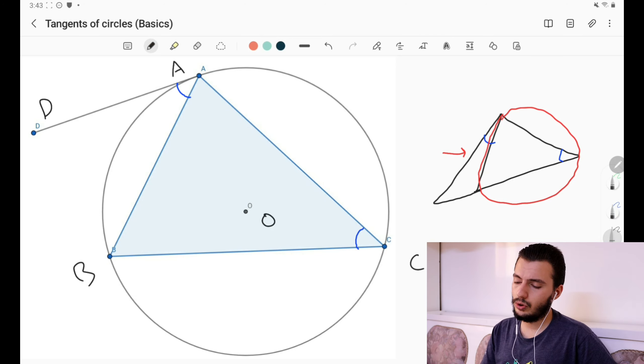The other property that we can use to deal with tangents is using the circumcenter or the center of the circle. If we just take O and join OA, it turns out that this is actually 90 degrees. So OA is perpendicular to the tangent line at point A. So angle OAD equals 90 degrees. This is also easy to prove.